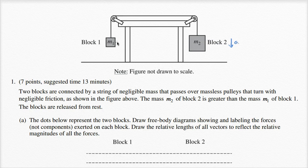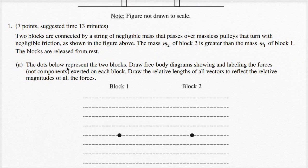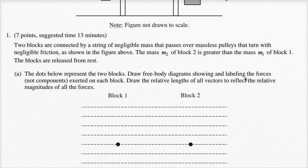Block one is going to accelerate upwards with the same magnitude. With that intuition of what we think is going to happen, let's tackle part A. The dots below represent the two blocks — this represents block one, this represents block two. Draw free body diagrams showing and labeling the forces, not components, exerted on each block. Draw the relative lengths of all vectors to reflect the relative magnitudes of all forces.